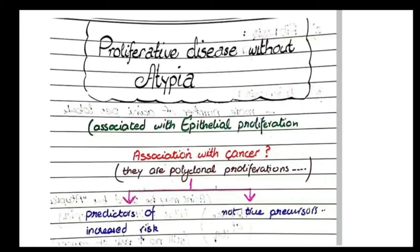In this video we will discuss the proliferative diseases of the breast. Firstly we will see proliferative diseases without atypia, then we will study proliferative diseases with atypia. Proliferative disease means that it is associated with epithelial proliferation.